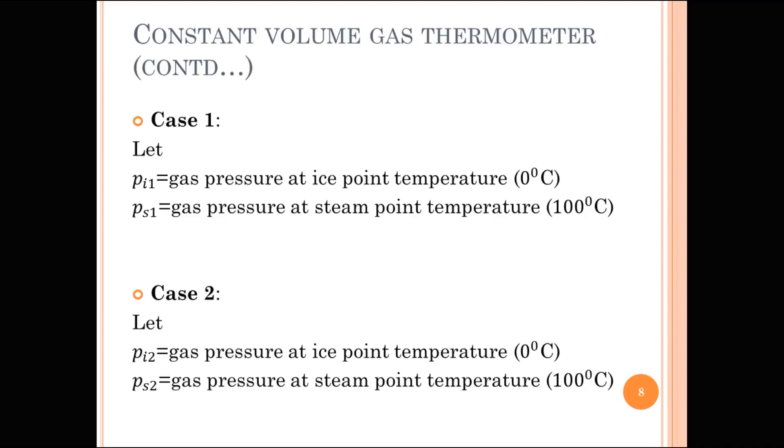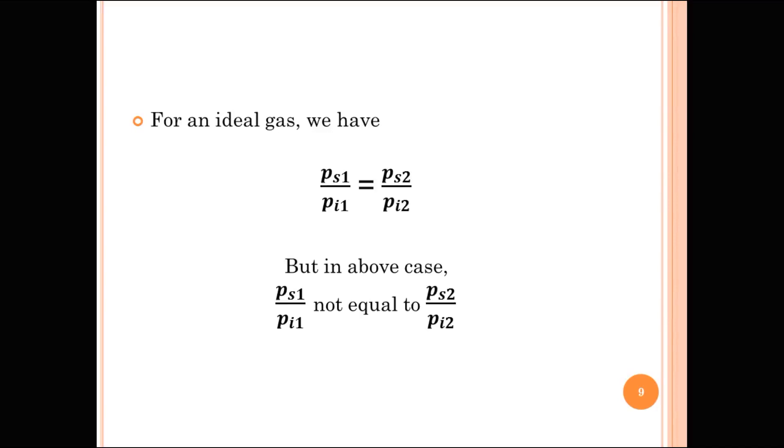Ps1 is greater than Pi1 as we are increasing the temperature. If we repeat the same experiment for another mass of gas, we will get Pi2 and Ps2. For an ideal gas, we have Ps1 by Pi1 equal to Ps2 by Pi2.